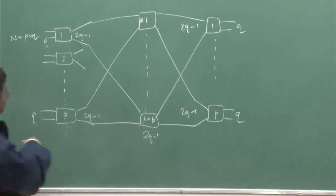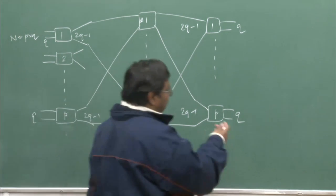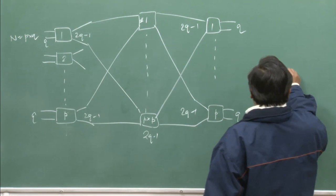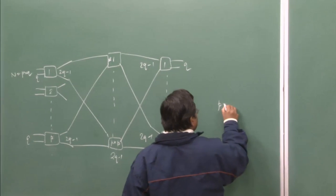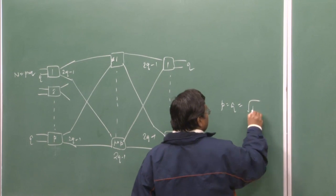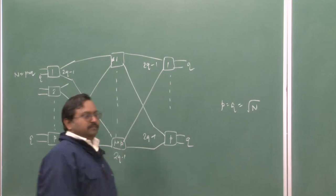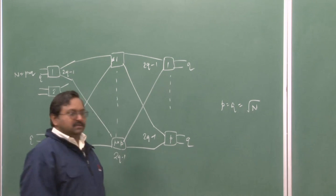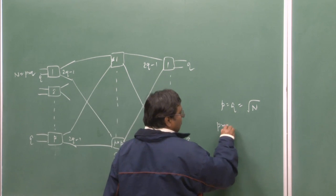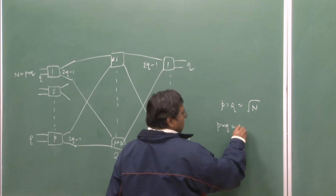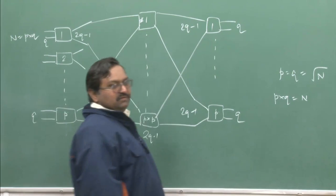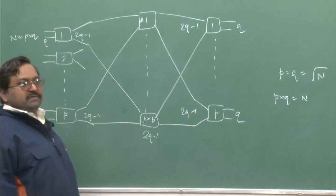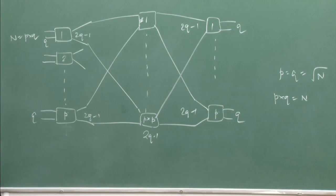What we did was: p = q = √n, and p·q = n. That was the condition with which we were trying to build up the number of cross points in the strictly non-blocking switch.